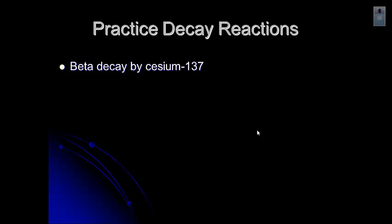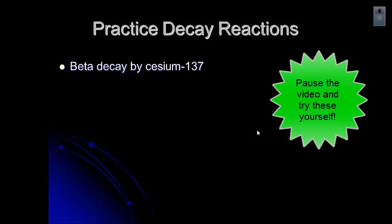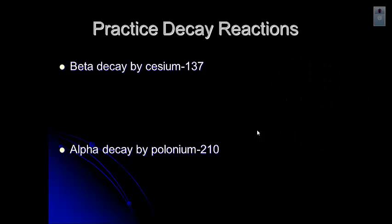So let's go ahead and take a look at this reaction. Beta decay by cesium-137. Go ahead and pause the video. Start off with your cesium-137. Draw the arrow and then the beta particle. And see if you can figure out the other product of the reaction. Then start the video and check your answer. Also, alpha decay by polonium-210. So polonium-210 on the left. Draw your arrow and then show the alpha particle on the right.